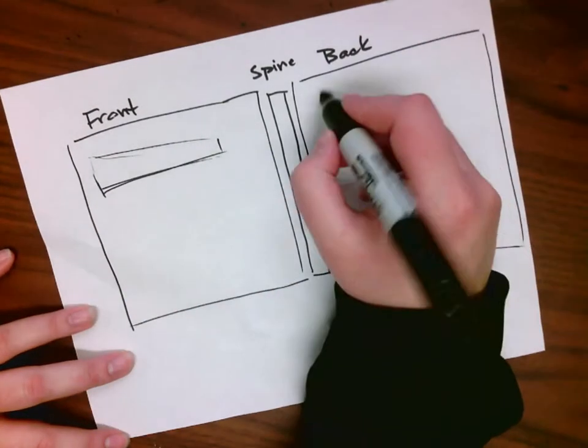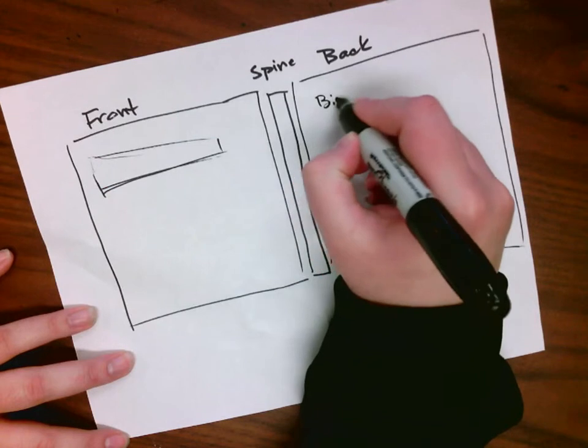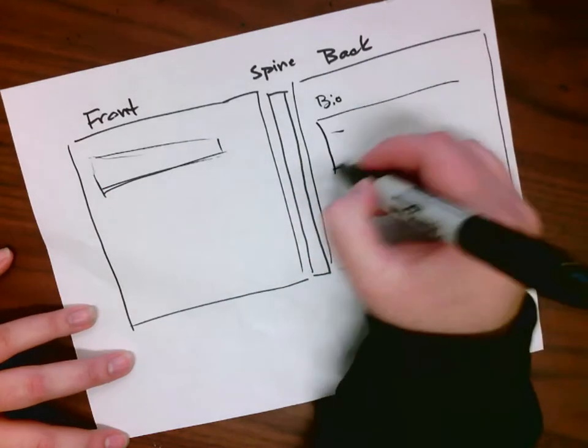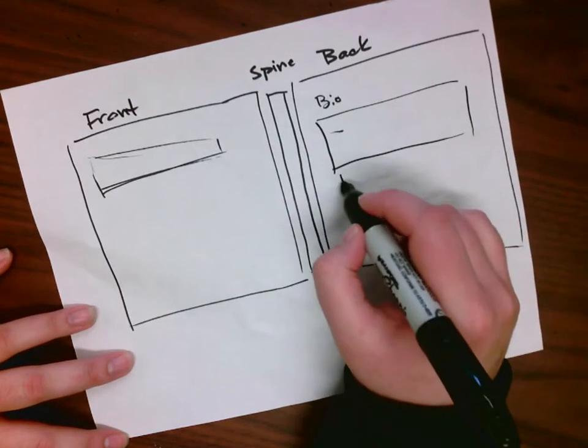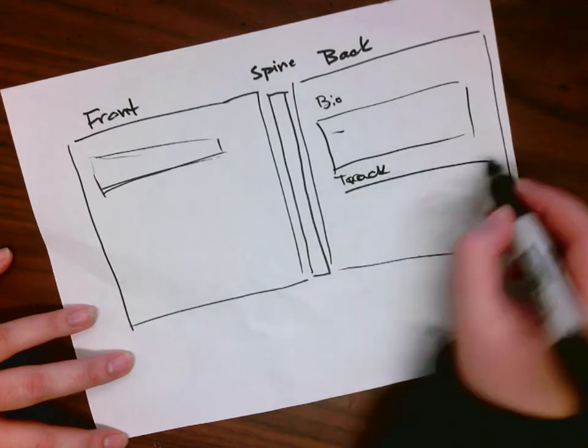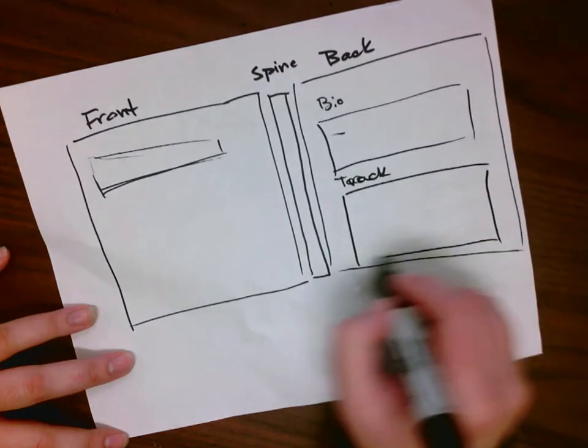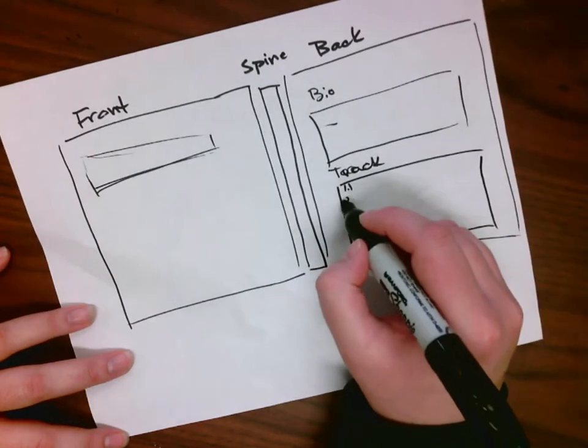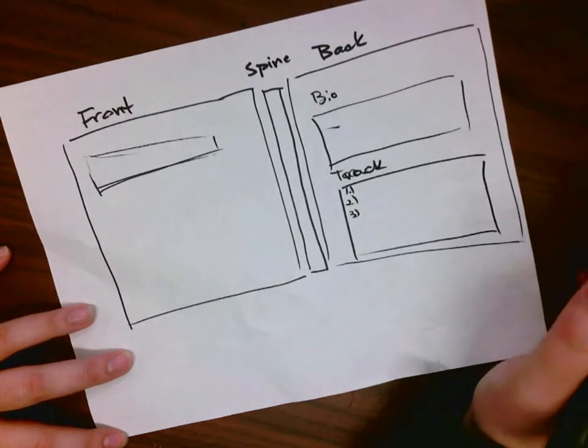On the back, typically there's either like a bio about the artist. There's like the track information. I could actually spell today. So it has like, you know, song one, song two, song three, and list off those things.